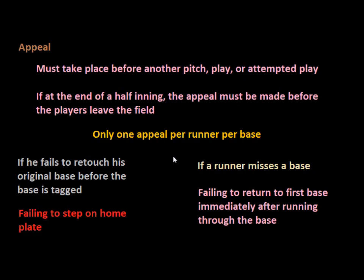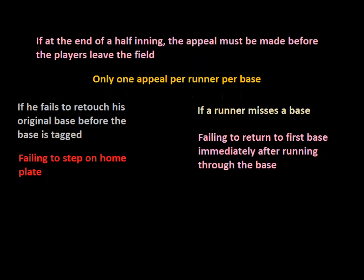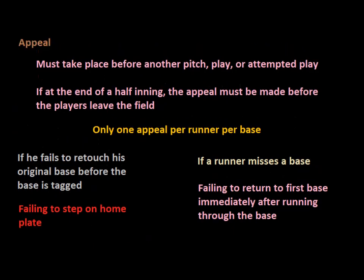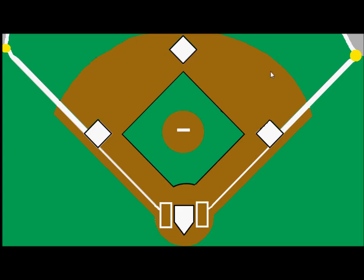But when it comes to appeals, there are a few situations where the umpire can actually acknowledge, under the rules of the game, something called the fourth out. There are quite a few different possibilities and situations where an appeal play can occur. Let's look at one and see how this fourth out could possibly come into play.